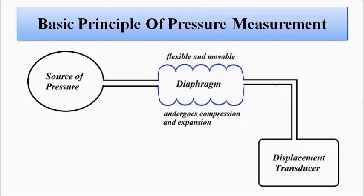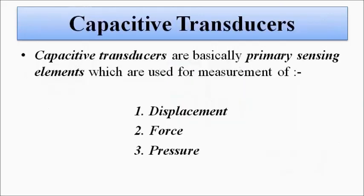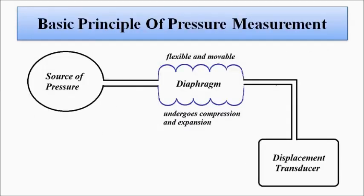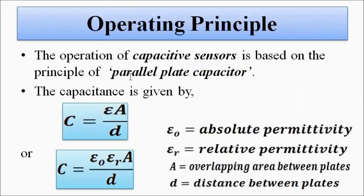Capacitive transducers are mainly used as primary sensing elements, but in this case it is acting as the secondary element. The principle of operation of capacitive transducers is based on the parallel plate capacitor.